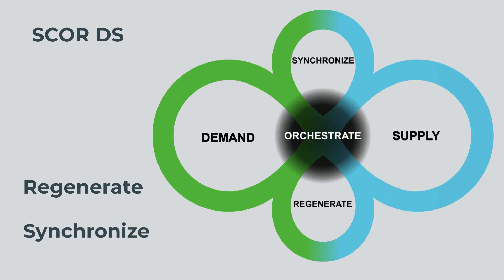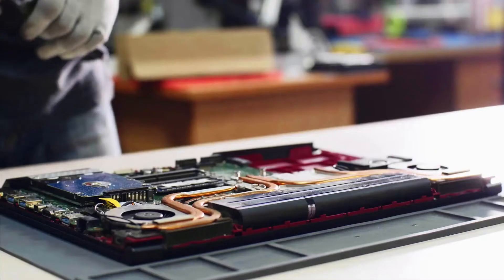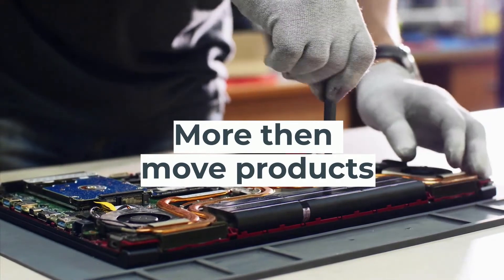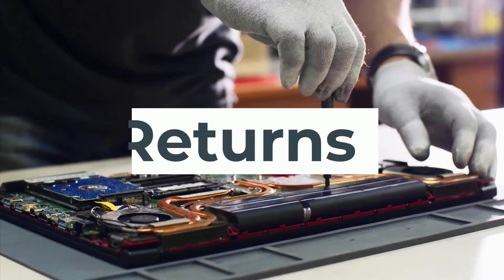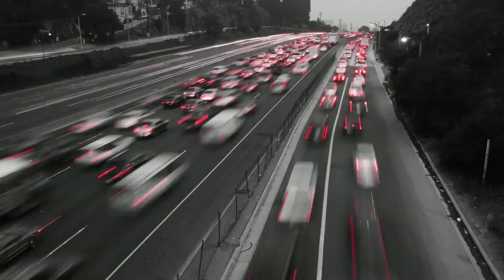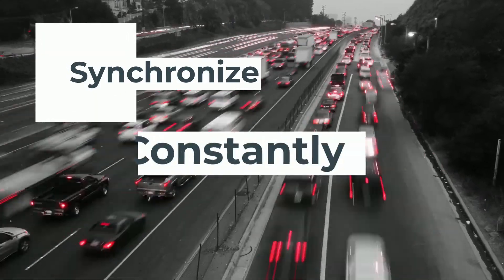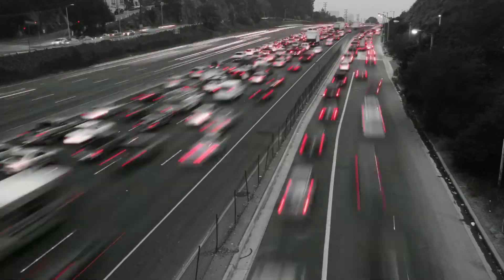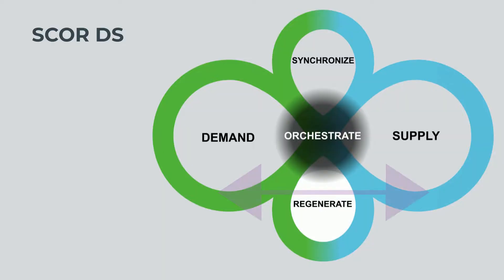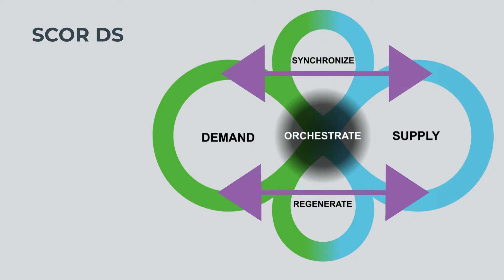REGENERATE and SYNCHRONIZE are linked through the vertical infinity loop. REGENERATE is vital because today's supply chains do more than move products. The modern supply chain focuses on returns, revisions, and after-sales services. REGENERATE and SYNCHRONIZE help by constantly matching the flow of goods between demand and supply. Because they have to do with both the demand and the supply side, they are both blue and green.